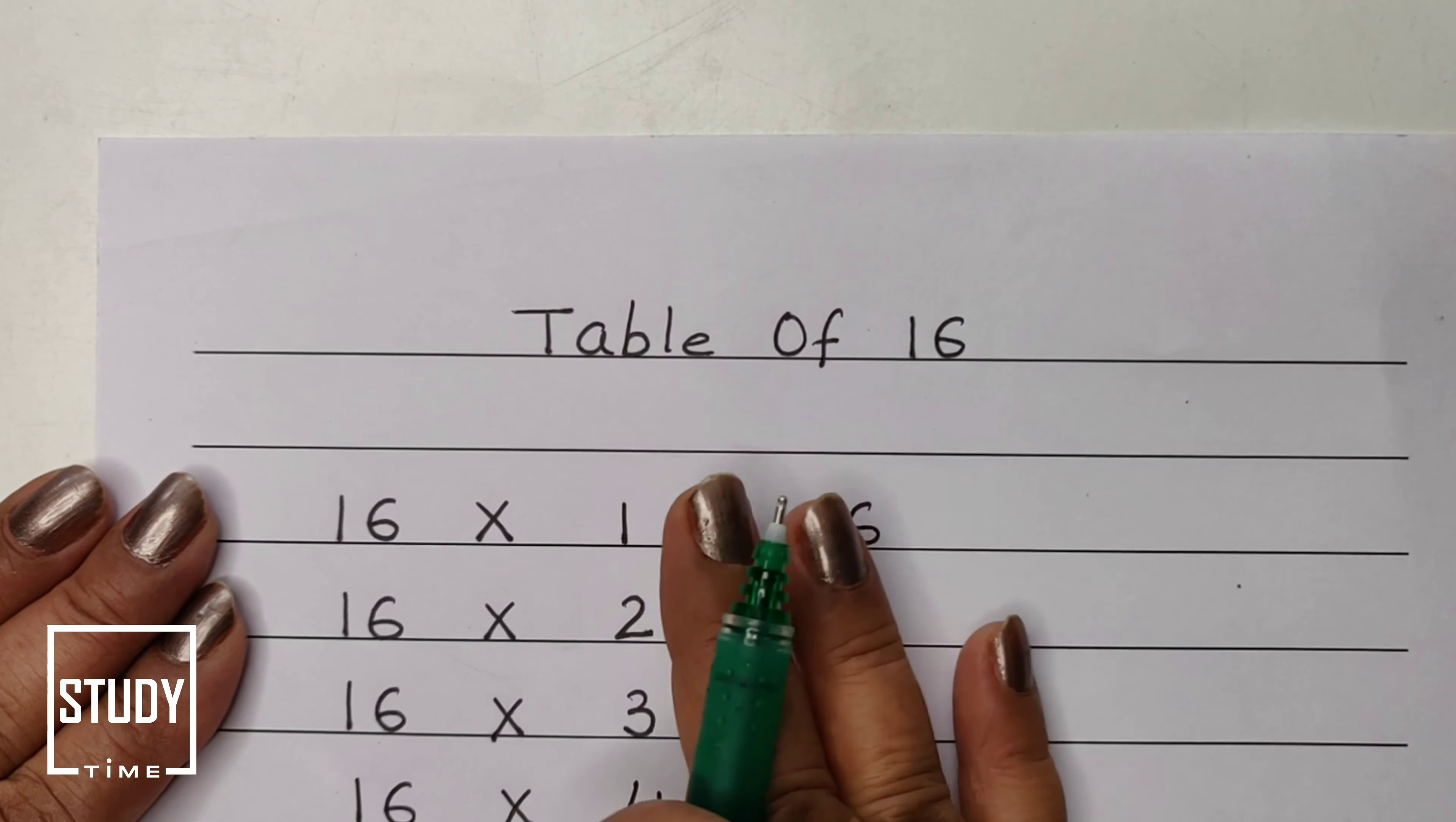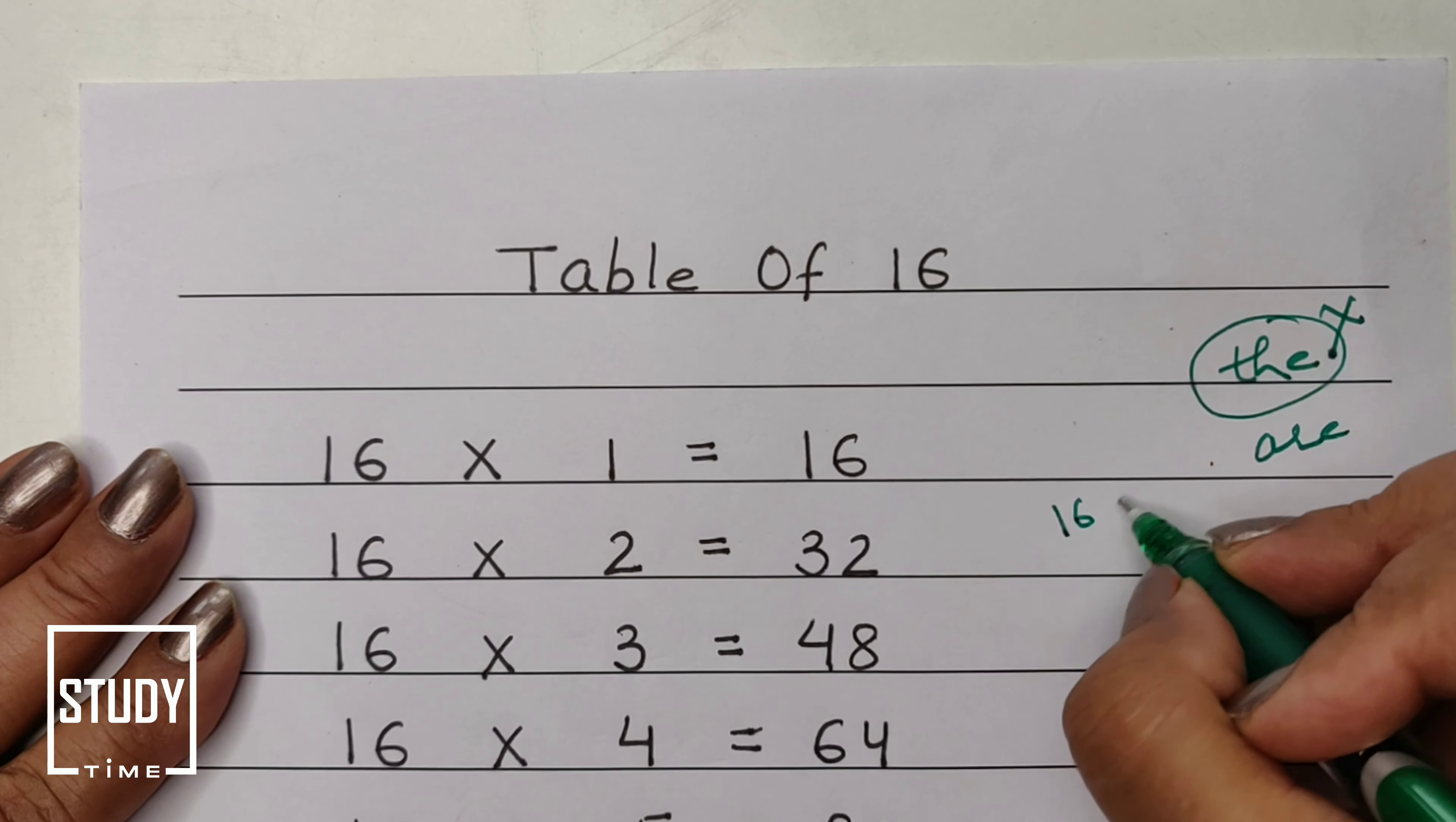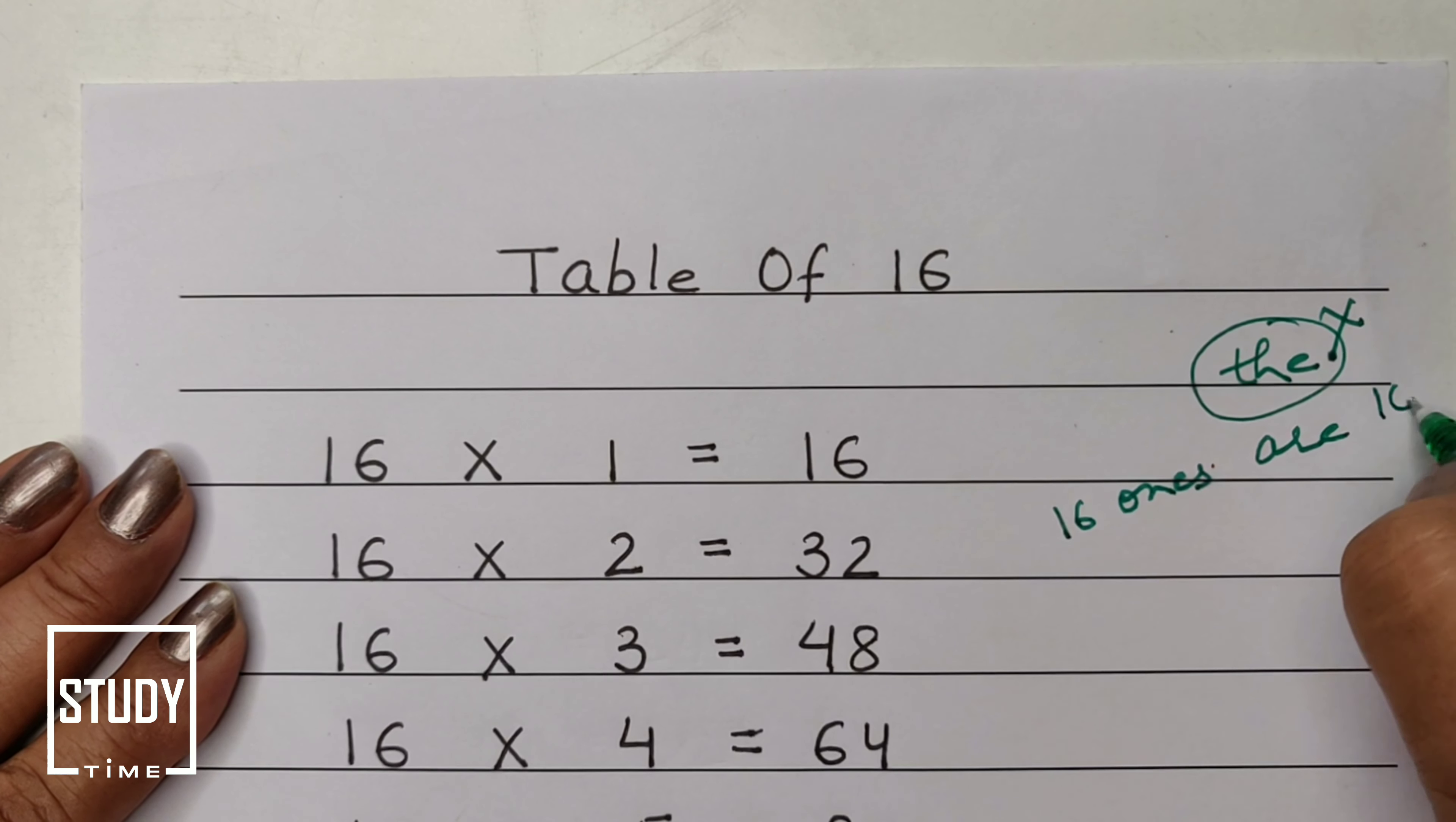When you read the table in English, they say 16 ones the 16, 16 twos the 32. But I will tell you that it's not 'the', it is 'are'. The correct way is 16 ones are 16.